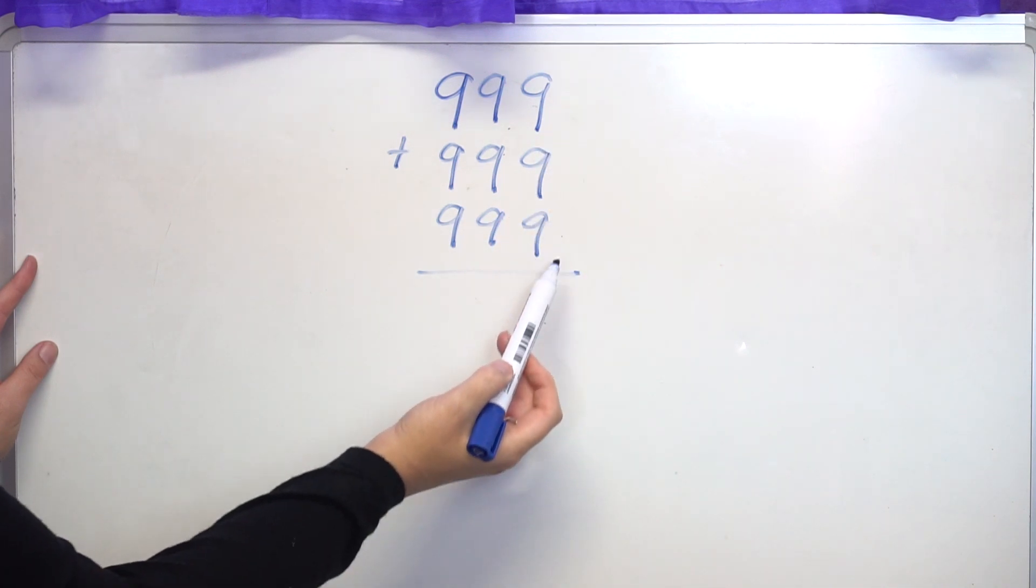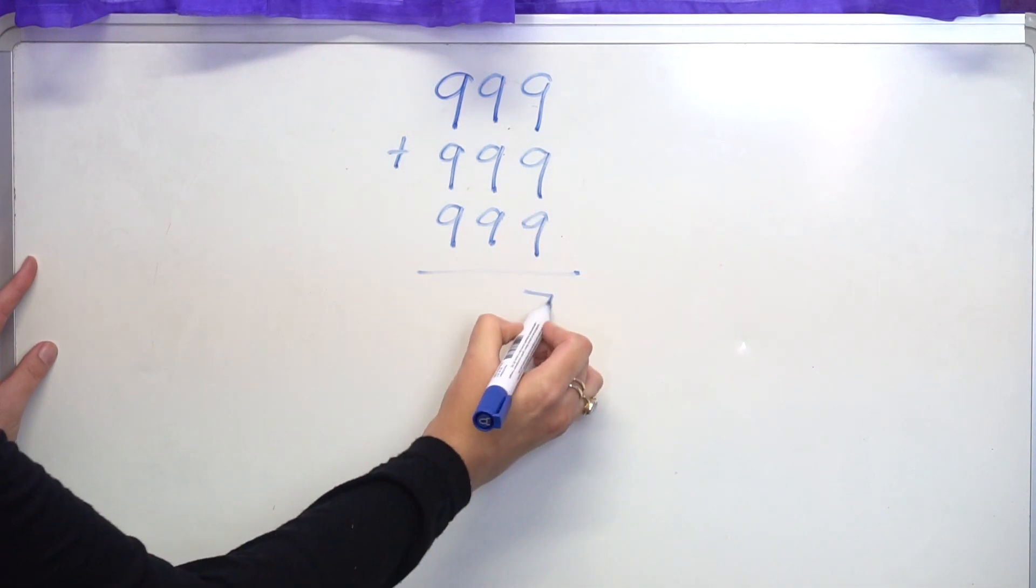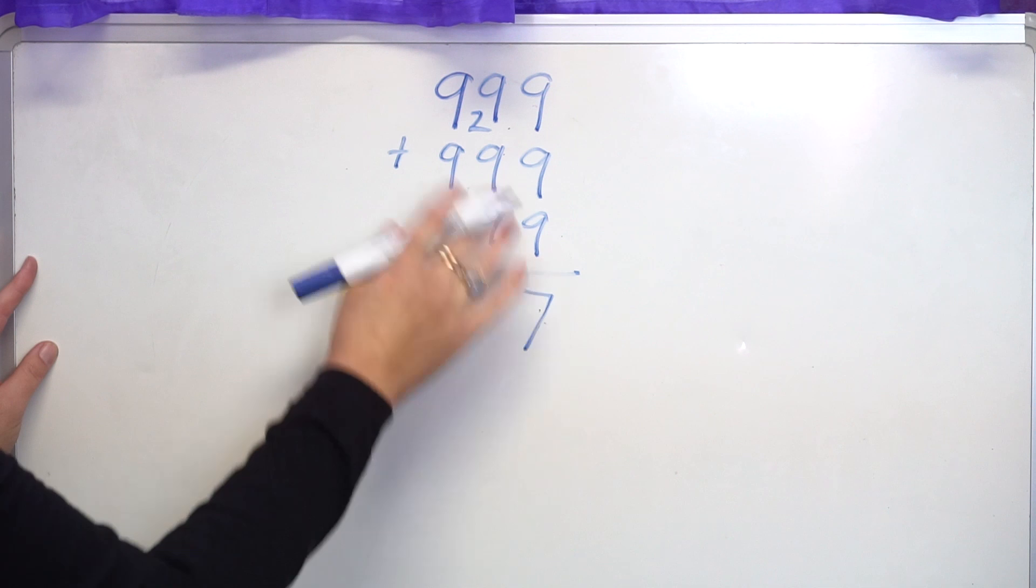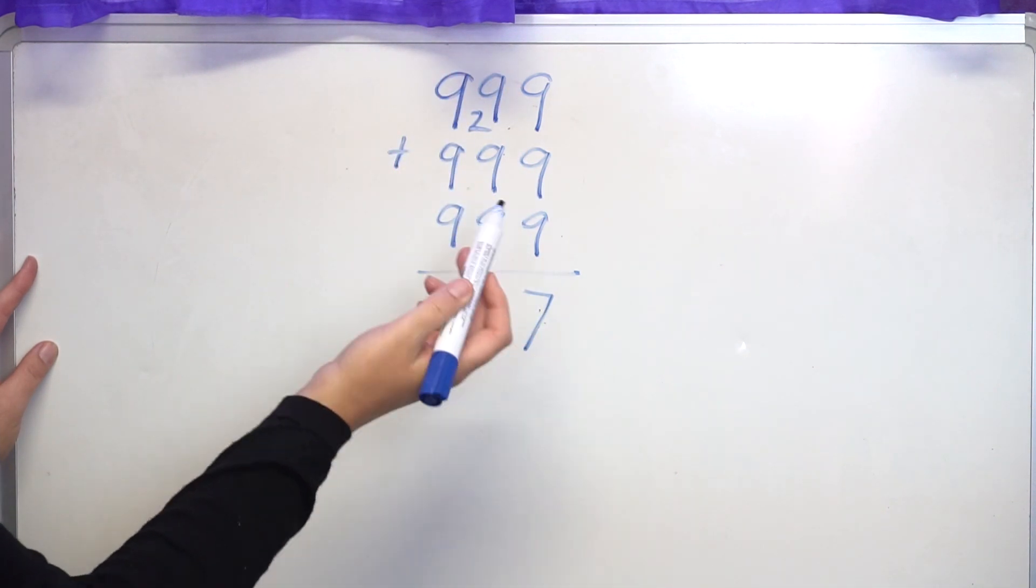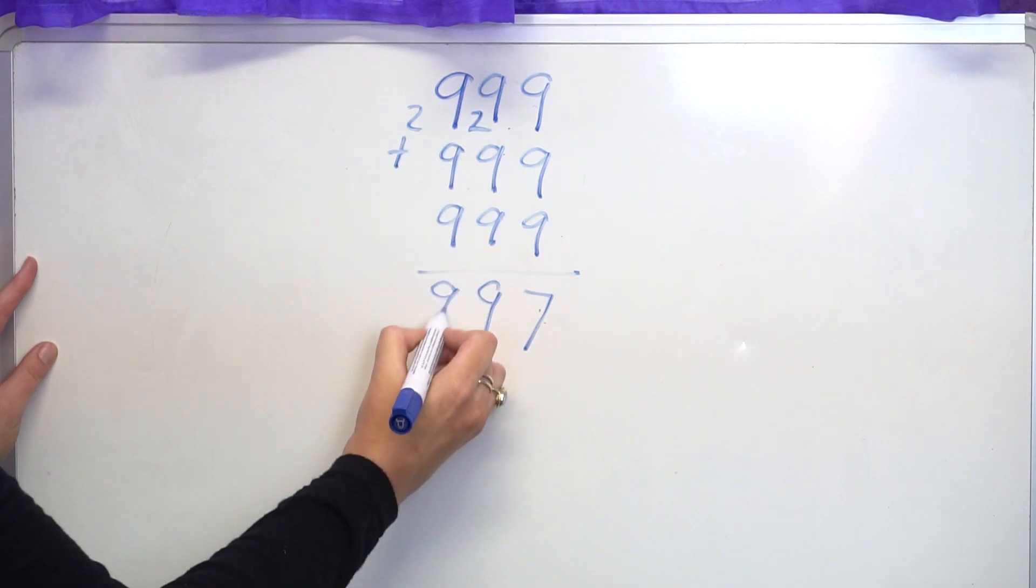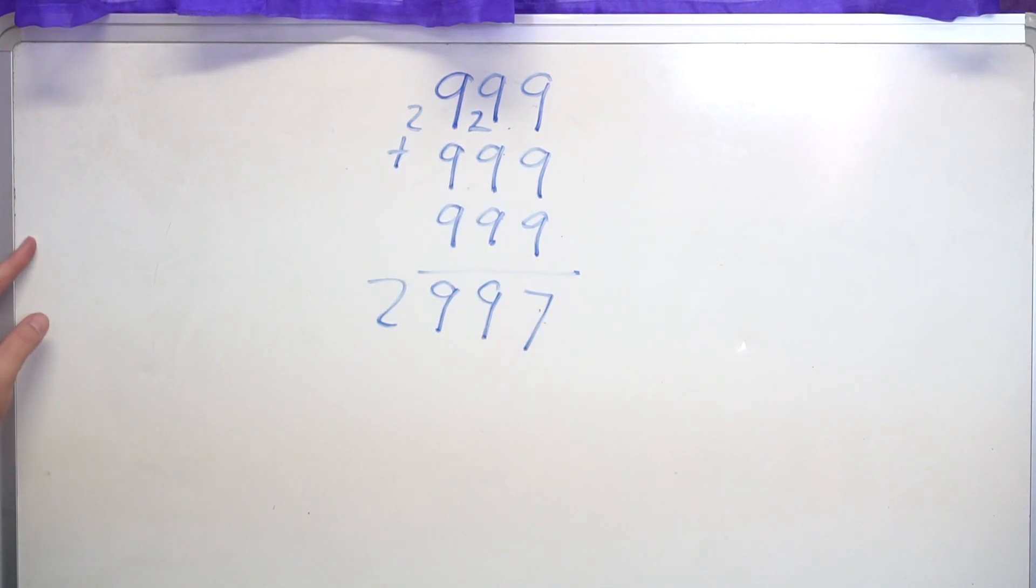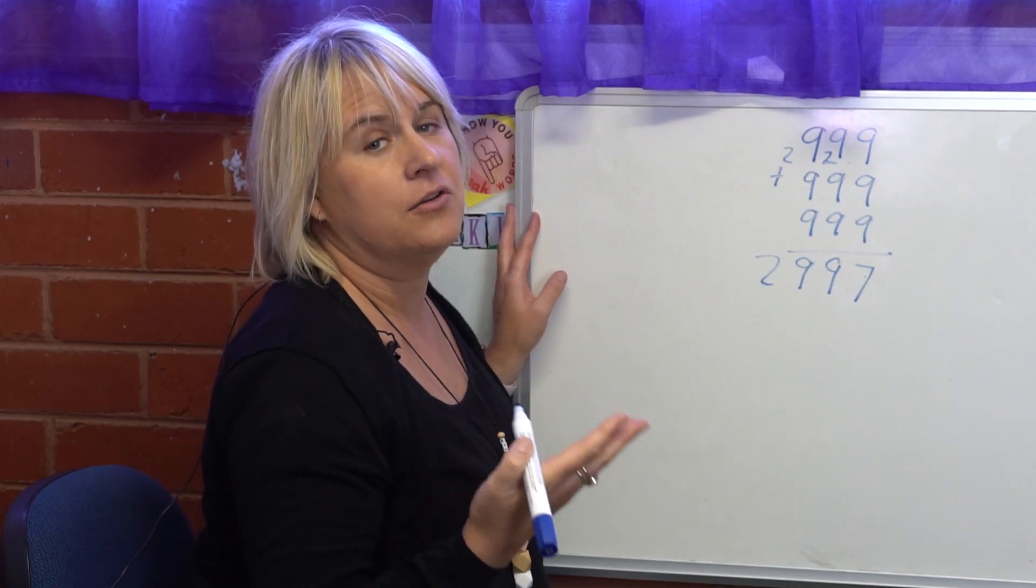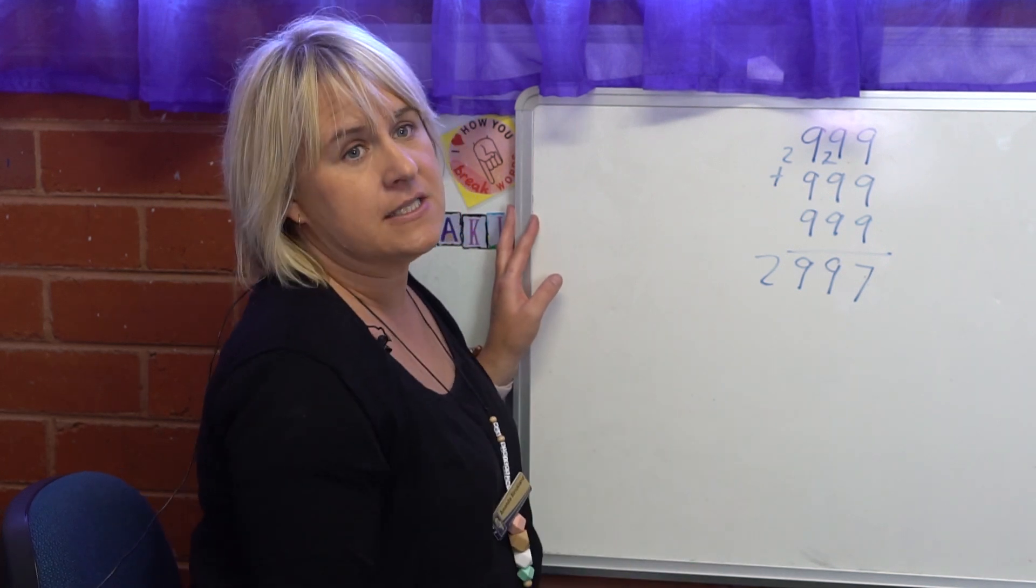I would have to do 9 plus 9 plus 9 which equals 27, put down the 7, carry the 2. 9 plus 9 plus 9 which equals 27 plus the 2 which equals 29, and the same again. And as you can see, that obviously couldn't be done mentally in your head.